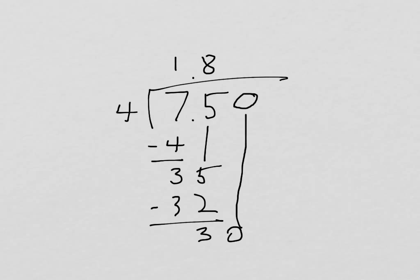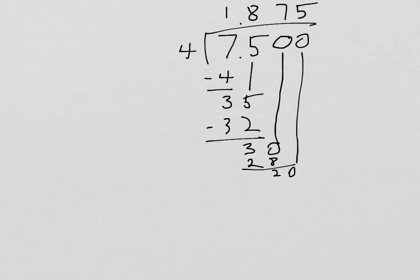4 now goes into 30 seven times. That gives me 28, remainder 2. I need to add another 0, and that is fine. So I have 20, and 4 goes in 5 times. That gives me 20 and remainder 0. I'm done. Pretty easy.